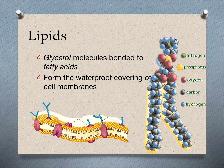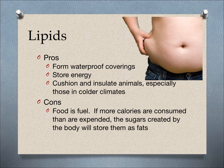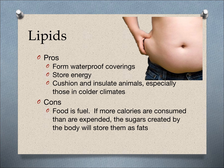Next, we'll talk about lipids. Lipids are glycerol molecules that are bonded to fatty acids. They can form waterproof coverings of cell membranes so that they only allow certain particles through. Lipids are good and bad at the same time. The pros of lipids are that they form waterproof coverings, they store energy long-term, and they can cushion and insulate animals, especially in colder climates — think of whales that have a thick coat of blubber, or seals. The con is that if you ingest more calories than you consume, especially from fatty foods, that sugar created will be stored as fat.